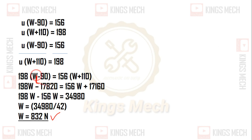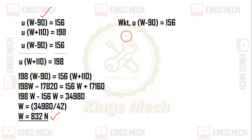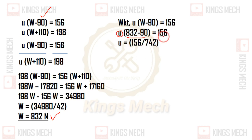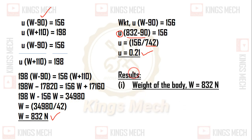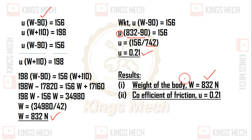Substituting W equal to 832 back into equation 1: μ(832 − 90) = 156, so μ × 742 = 156. Therefore μ equals 156 divided by 742, giving U equal to 0.21. So the results are: weight of the body W equals 832 N, and coefficient of friction between the surfaces is 0.21.